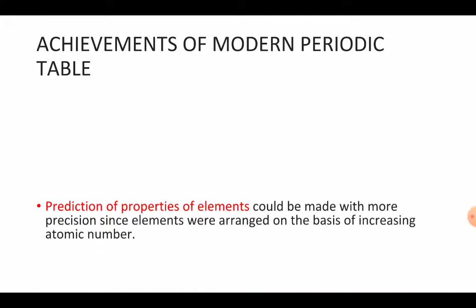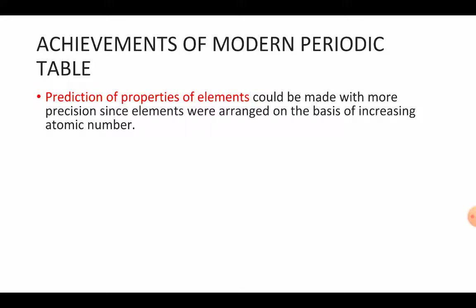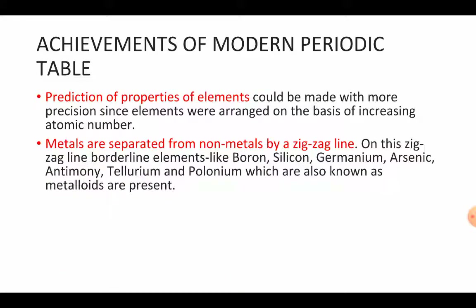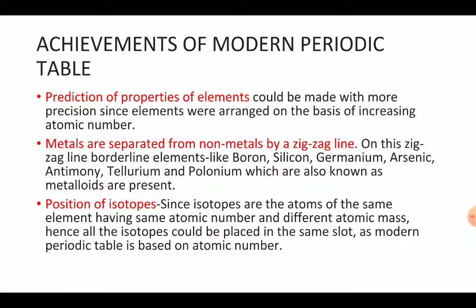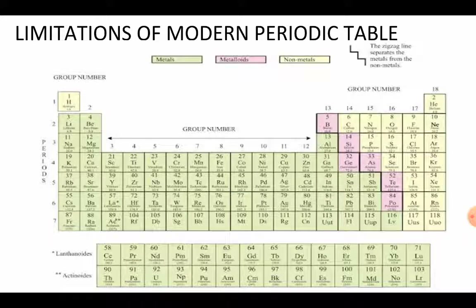But there are certain limitations also. There are two major limitations which are still present in the modern periodic table. The very first limitation is the same as that of Mendeleev — that is the position of hydrogen.